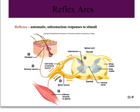Many reflexes run through the spinal cord. Here we have an example of a withdrawal reflex running from the skin going to the spinal cord. There's an interneuron in the spinal cord that converges on a motor neuron going out to our muscle. Three neurons is all that's involved in this simple spinal reflex.